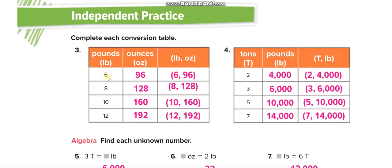For 6, 8, 10, and 12 pounds: since one pound is 16 ounces, we calculate 6 times 16, 8 times 16, 10 times 16, and 12 times 16. The first row is for pounds and the second row is for ounces.